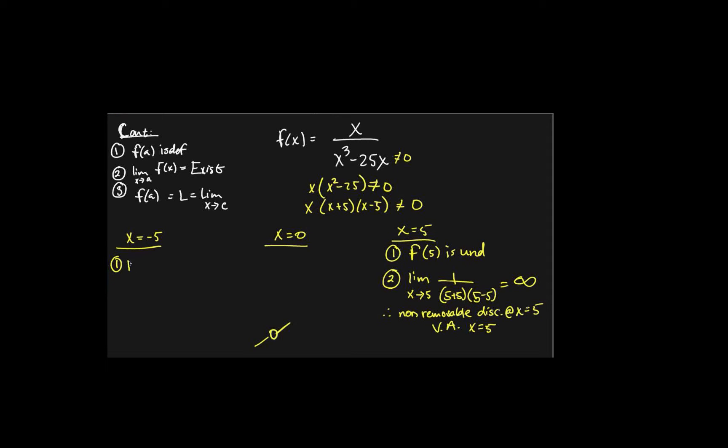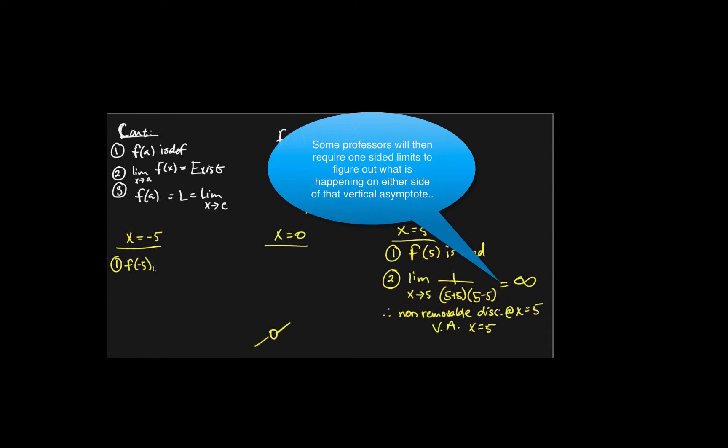Now, same thing will happen when we do negative 5, so when I look at the denominator, I automatically realize it's undefined.